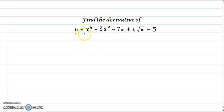Find the derivative of y = x⁴ - 3x² - 7x + 4√x - 5. Here we will take the derivative of individual terms because they are connected by plus and minus signs.